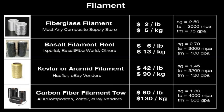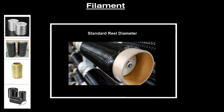Carbon fiber filament tow is lighter and stronger than all other filaments. There are many types and grades of carbon fiber and prices can vary widely depending on the listed tensile strength of the filament. We purchase from ACP Composites, Zoltek, and several eBay vendors with good success. The reel holder on the X-Winder works best with reels that have a 3-inch inner diameter, which is generally a standard in the industry. Reels in excess of about 15 pounds or 7 kilograms may exceed the carrying capacity of the X-Winder.